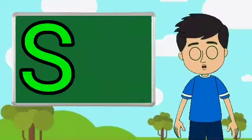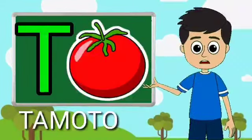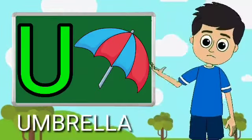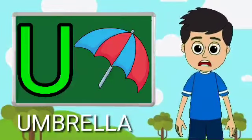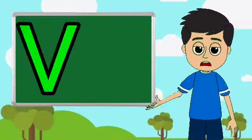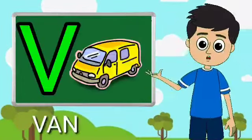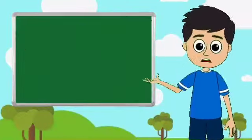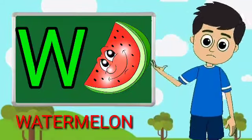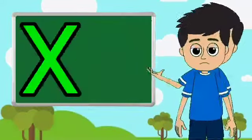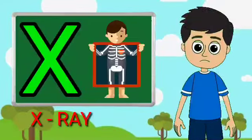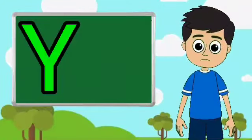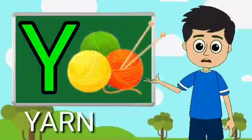E for tomato, U for umbrella, E for band, W for watermelon, X for extra, Y for yarn.